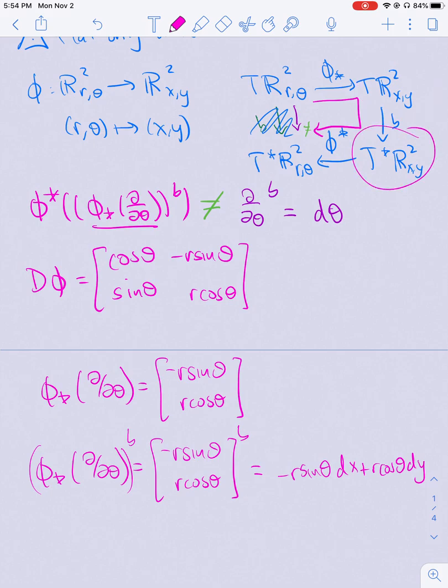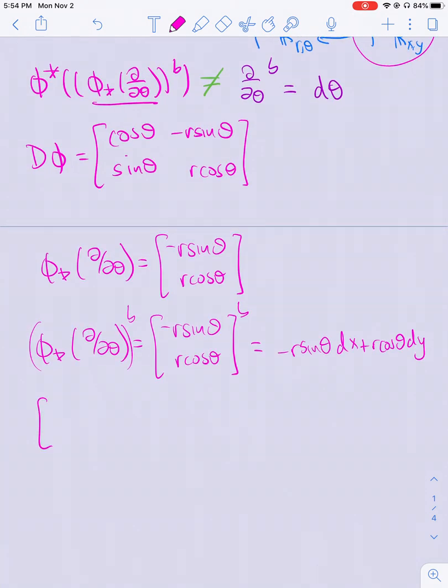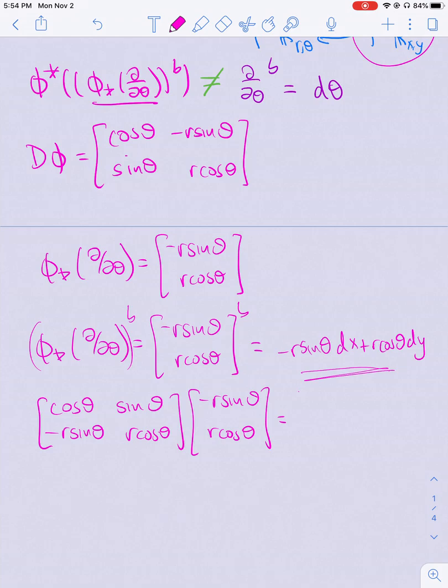Okay, so now let's take the pullback. So the pullback is the transpose of dφ applied to the transpose of this row vector, so cos θ -r sin θ, sin θ r cos θ, applied to -r sin θ, r cos θ. So let's see what I get. So I'm going to get -r sin θ cos θ plus r sin θ cos θ, so those will cancel out, and then I'll get r² sin² θ plus r² cos² θ.